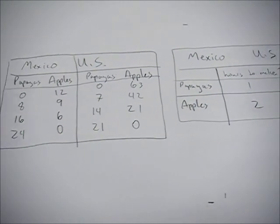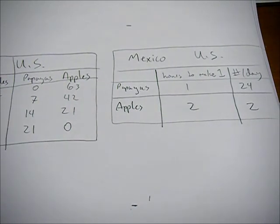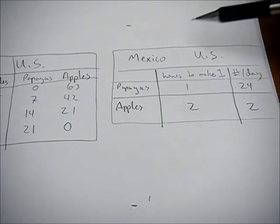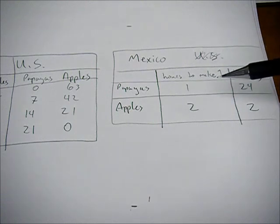The other way this can look is if we have a description of how many of the good they can produce in a day. So here we only have Mexico, and we say how long does it take them, how many hours does it take to make one.